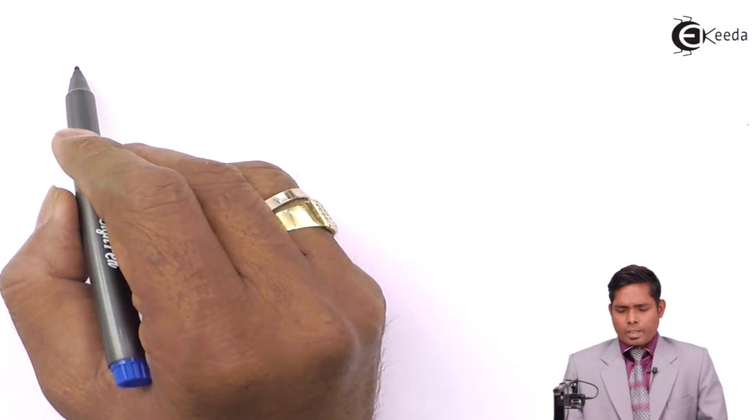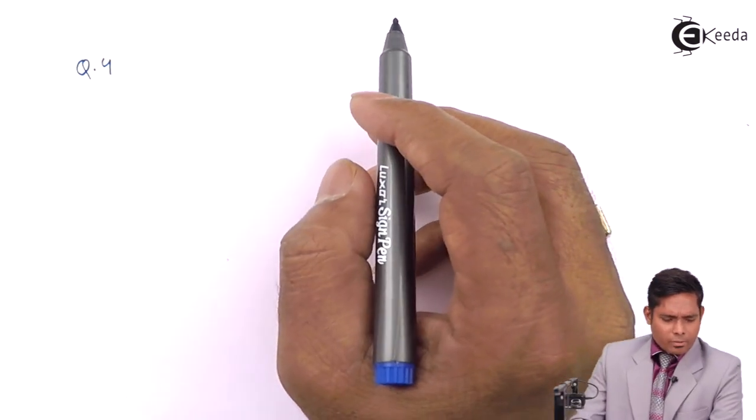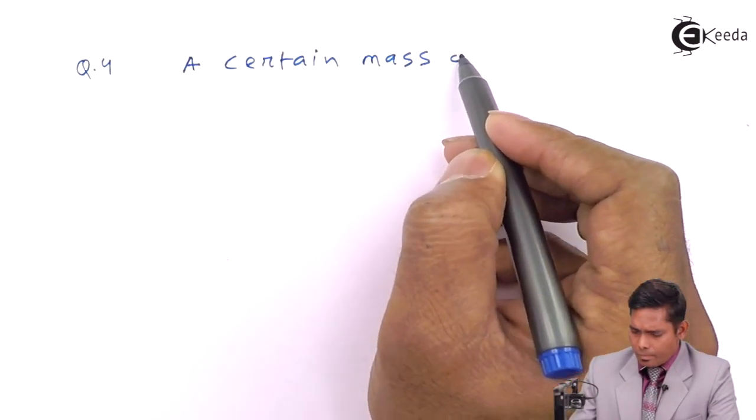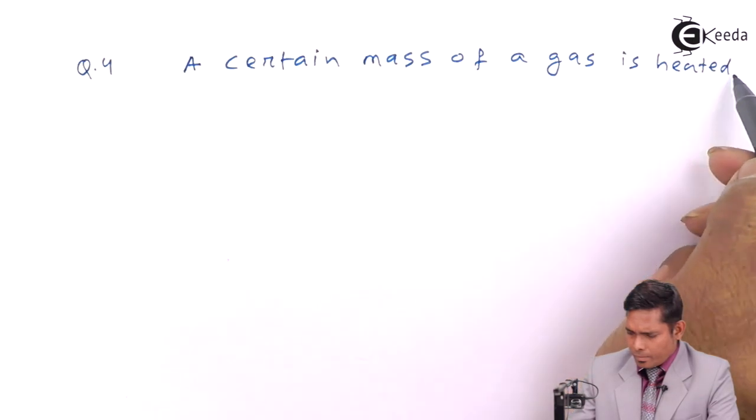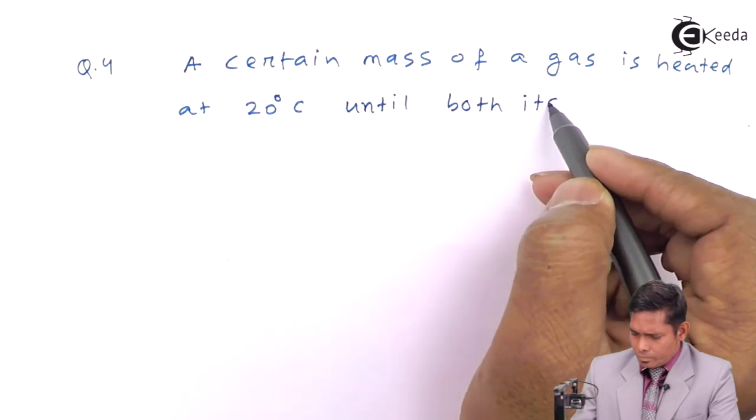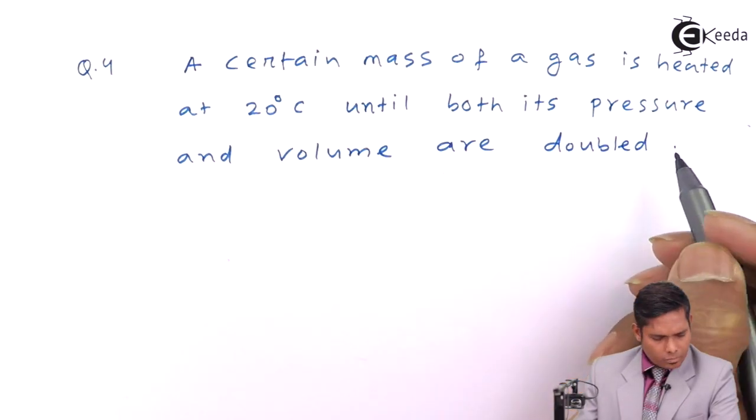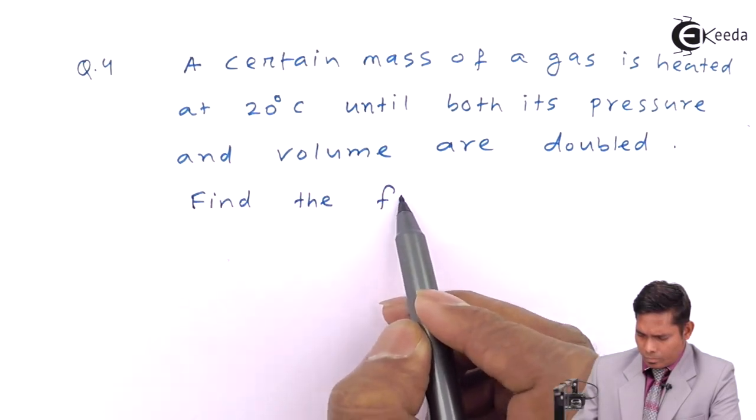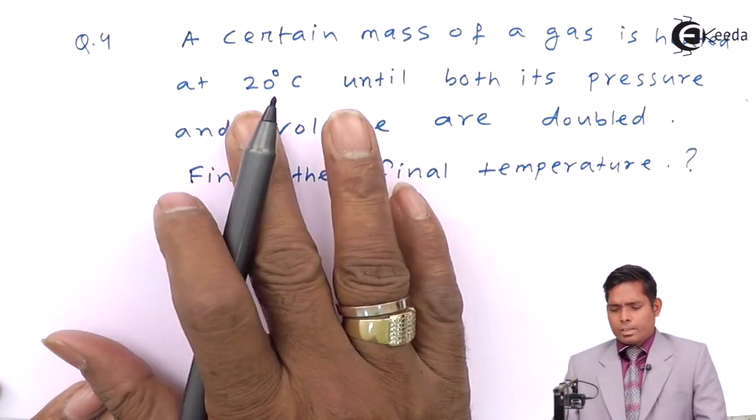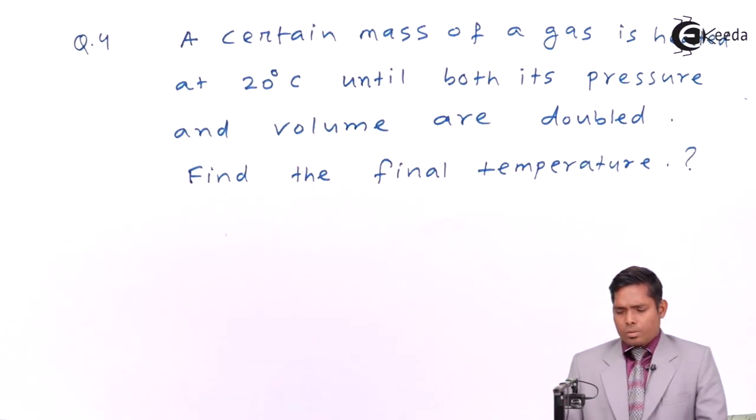So numerical number 4 for ideal gas equation. The question is: a certain mass of gas is heated at 28 degrees centigrade. Keep heating it till its pressure and volume are doubled.